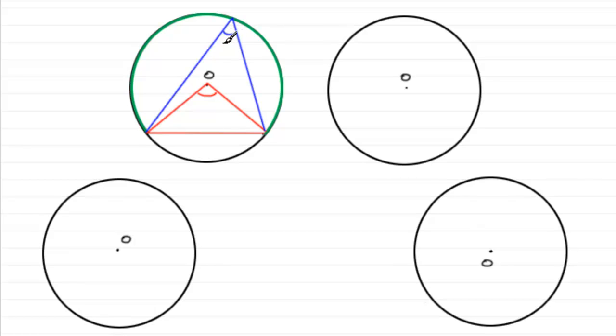If we call this angle theta, it can be shown that this angle is twice the size, in other words 2 theta. And it's this theorem that we use for this special case.